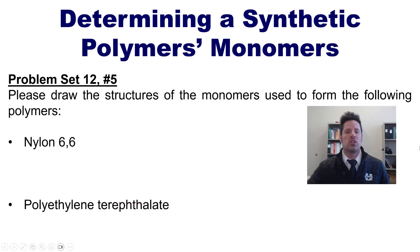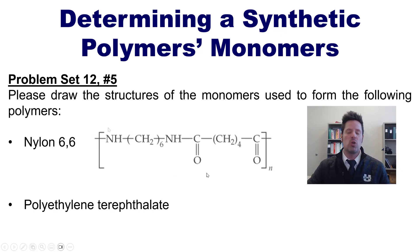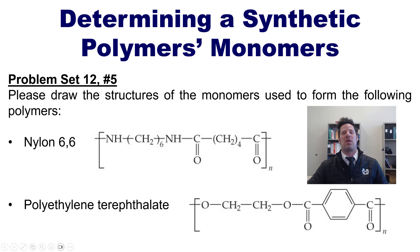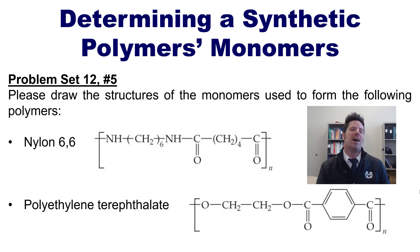Now use the techniques I've shown you to draw the structures of the monomers used to make each of these polymers: nylon 6-6, whose full polymeric structure is shown here, and polyethylene terephthalate, whose structure is also shown. I won't walk through those here, but a link in the description below will take you to a separate video where I do. I hope these teachings are useful — until next time, please have an enjoyable rest of your day.